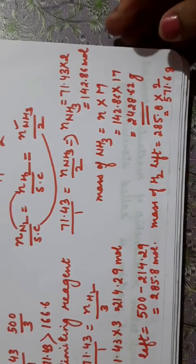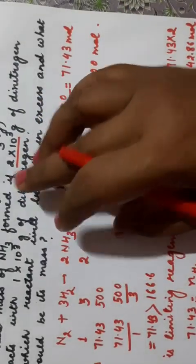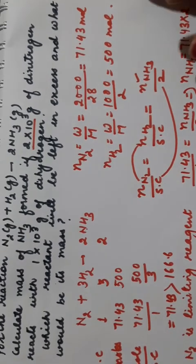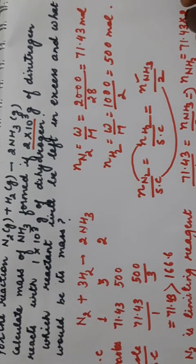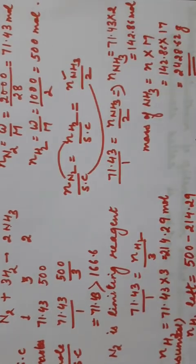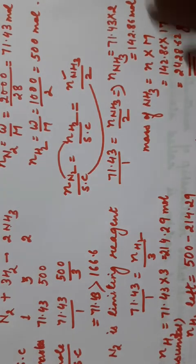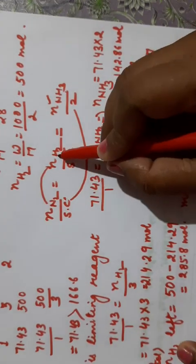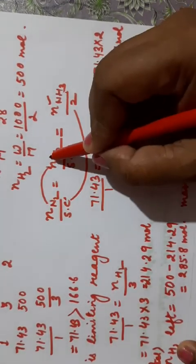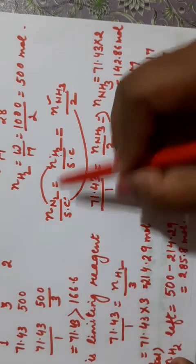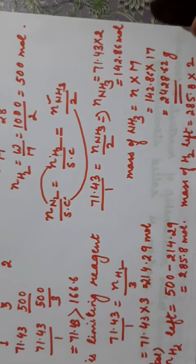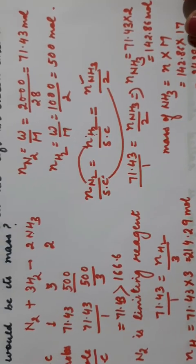This was the NCERT question where mass was given and we were asked for masses of substances formed or consumed. The approach is: convert mass to moles, calculate the limiting reagent, calculate moles of product from the limiting reagent, calculate moles of excess reactant consumed, then subtract from total to find what is left, and convert back to mass. I hope this topic is clear. If you like the video please share and subscribe. Thank you.